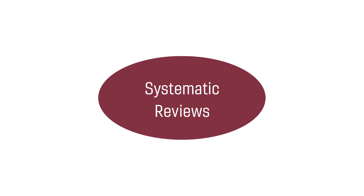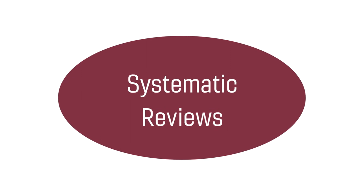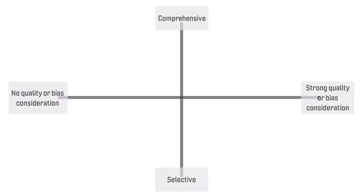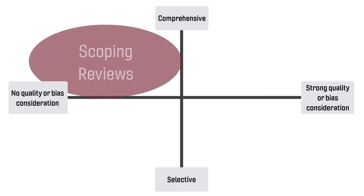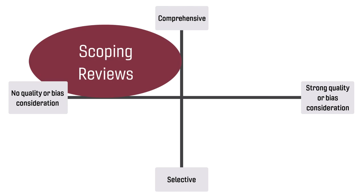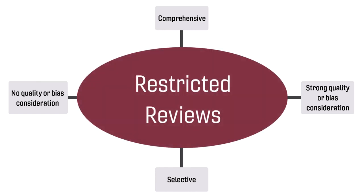You might find that a systematic review approach doesn't fit your research question or current resource conditions, but there are other kinds of comprehensive reviews that you may consider. For example, we use scoping reviews to map or illustrate the field of information related to a comparatively broader question. Restricted reviews, or rapid reviews, is a term for a systematic review with some kind of constraint such as a tight deadline, a restricted search, or not having access to a full team.